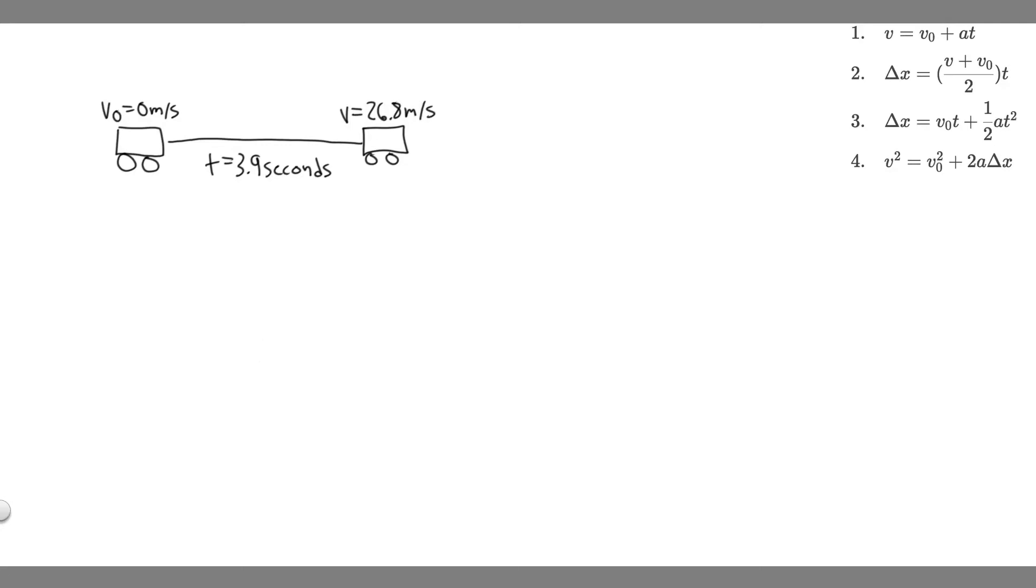In this problem, we're told a powerful motorcycle can accelerate from rest to 26.8 meters per second in only 3.9 seconds. Part A asks what is its average acceleration, and part B asks how far does it travel in that time?